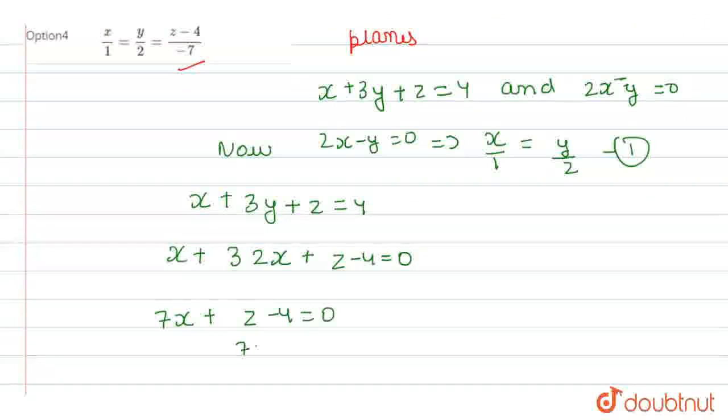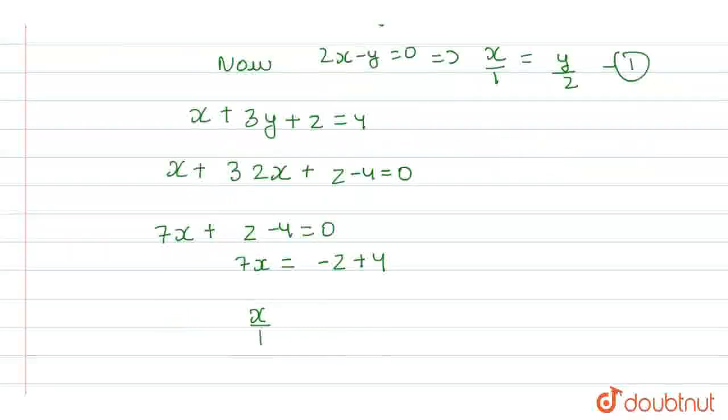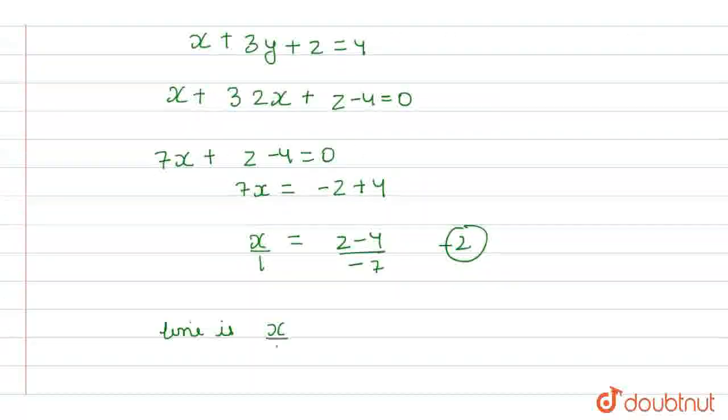It will become negative, so z plus 4. We will get x over 1 equal to z minus 4 by minus 7. Let's suppose this is our equation 2.